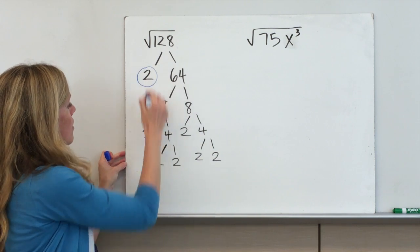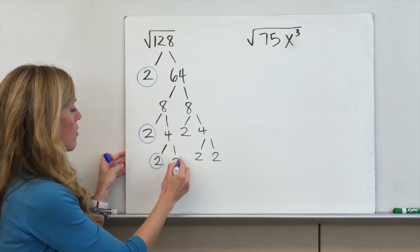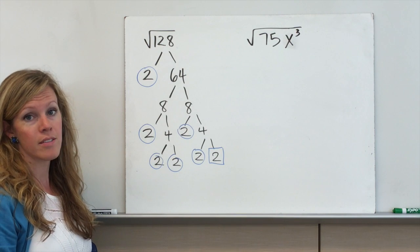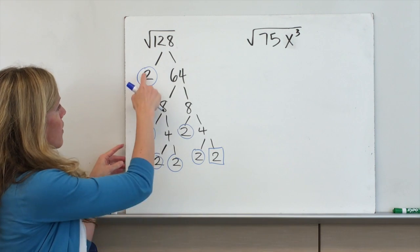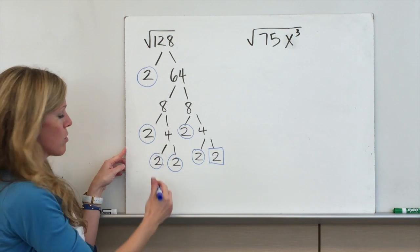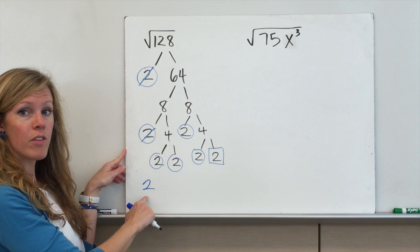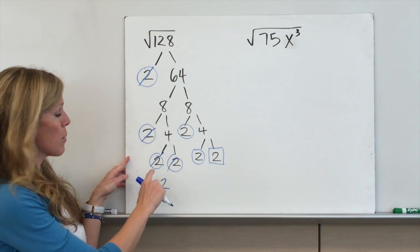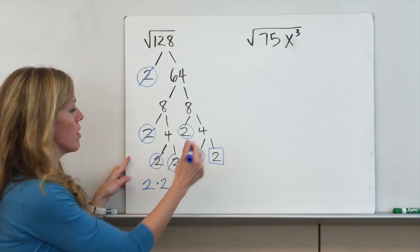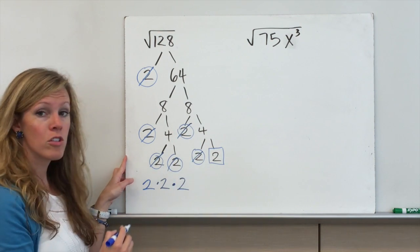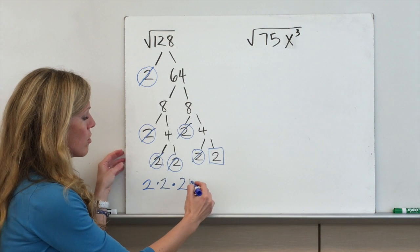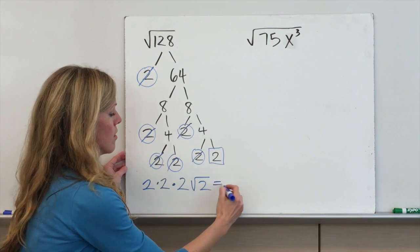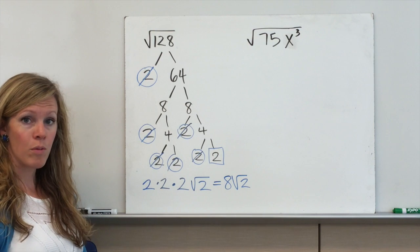Now I want to find the pairs. I've got a pair of 2s right here, a pair of 2s right here, another pair of 2s, and then this one 2 that's by itself. For each pair, radical 2 times radical 2 equals 2, so I write one number outside the radical. That gives me 2, then another 2, then another 2. And then I've got this one radical 2 that does not have a pair. So 2 times 2 is 4, times 2 is 8. Our simplest form is 8 radical 2.